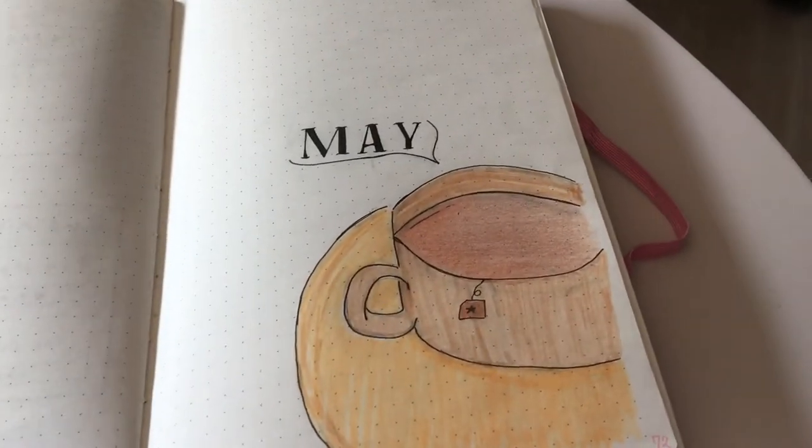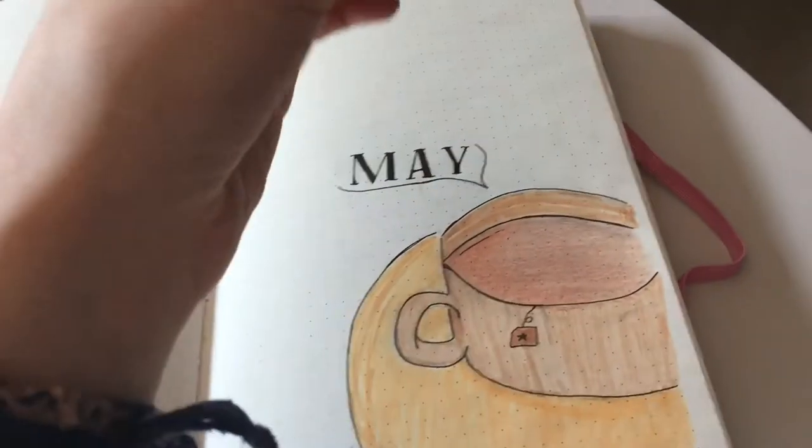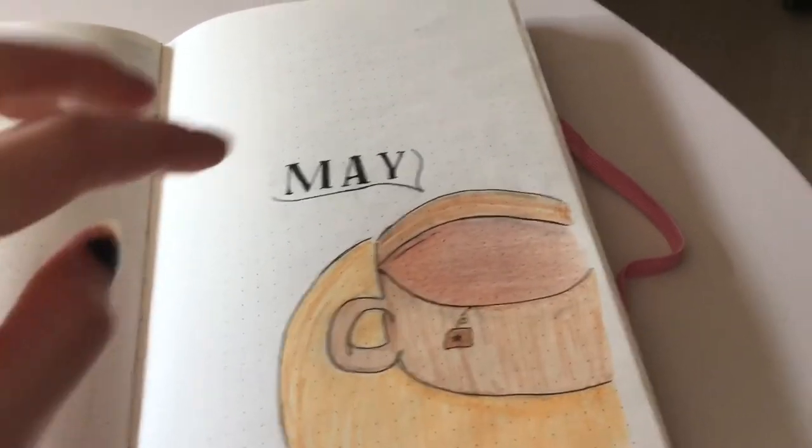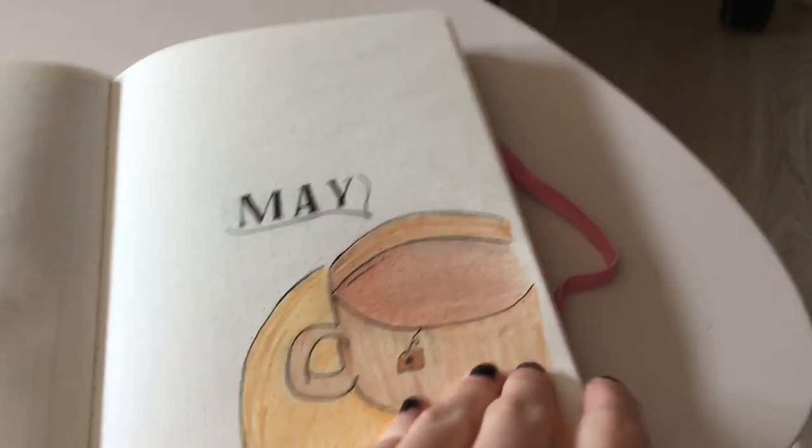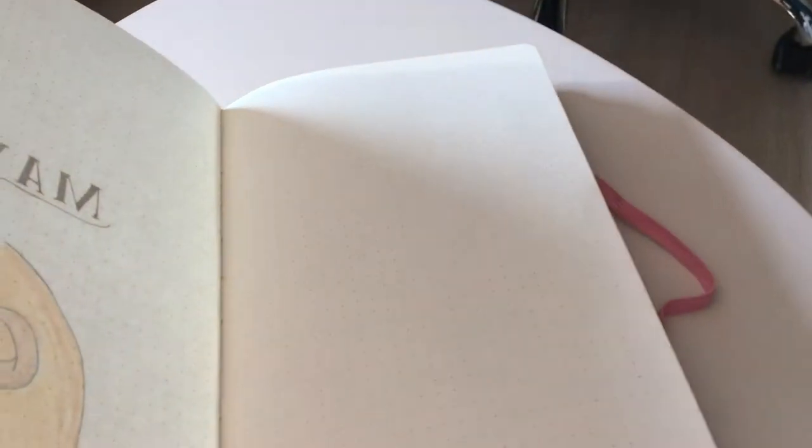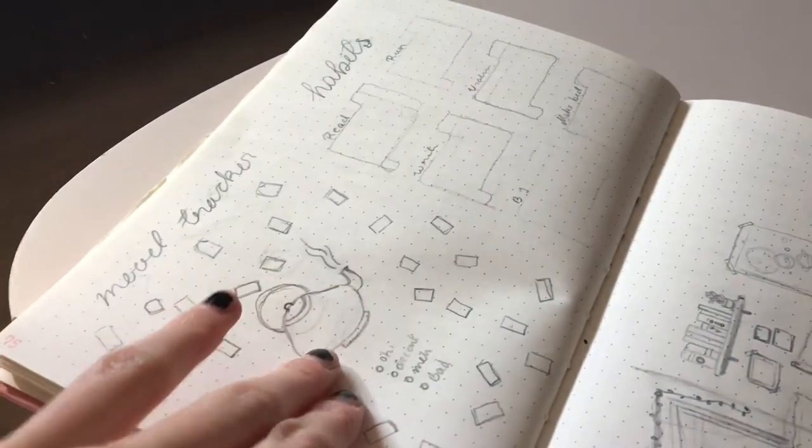On Pinterest I saw people put like blobs down of coffee stains in the pages of the journal and I thought I'd give that a try. So this is just gonna go amazing. I left a blank page right here because I don't want coffee on my habit track, that's disgusting.